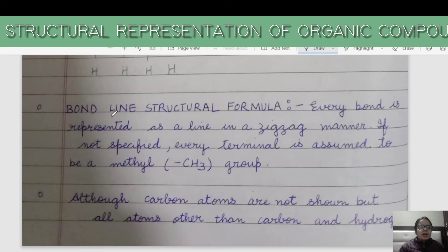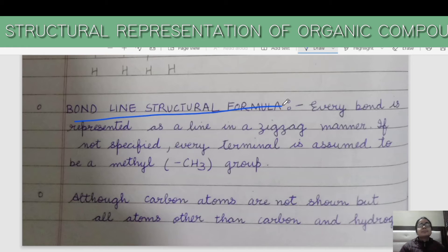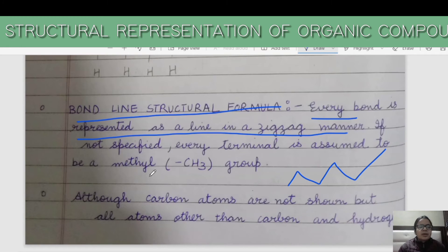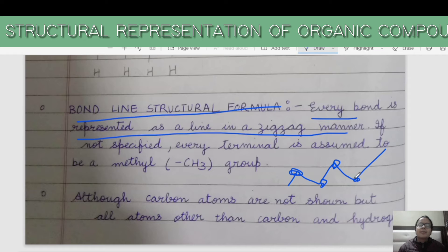Next is the bond line structure formula. This is a very interesting kind of structural representation. Every bond is represented as a line in a zigzag manner. If not specified, every terminal is assumed to be a methyl group. The junction points where lines meet represent carbon atoms. We know that carbon has a tetravalency, so the remaining valences are filled by hydrogen.